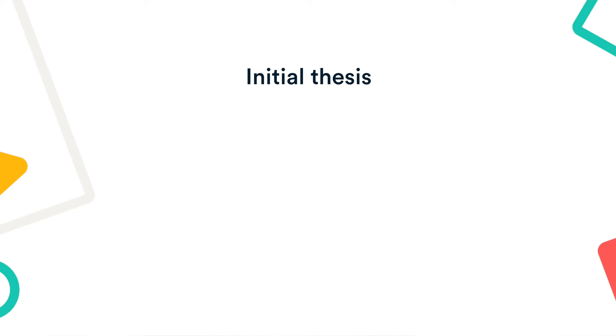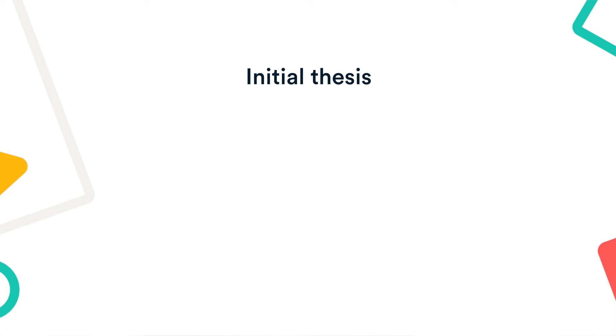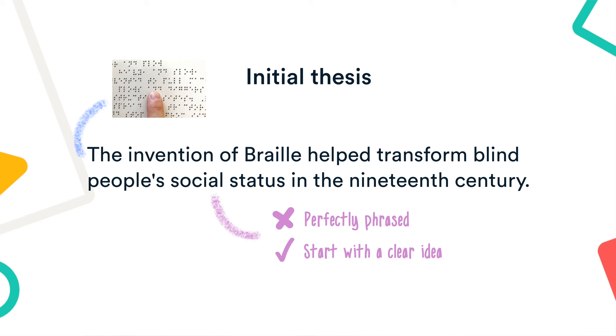In the preparation stage, you first need to understand the assignment and choose a topic. Once you've chosen your topic, you should come up with an initial thesis. This is the main point you want to make in the essay, or the position you're going to argue for. At this stage, it doesn't have to be perfectly phrased, but it's important to start with a clear idea of what you want to say.